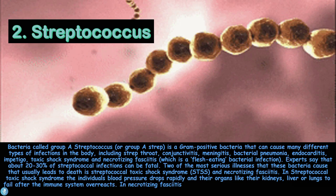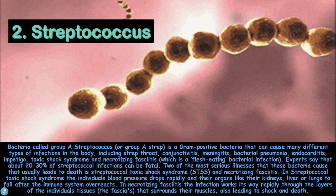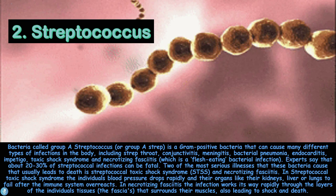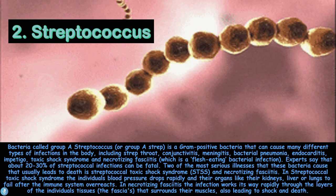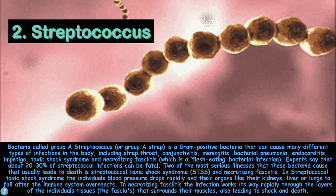Two of the most serious illnesses caused by these bacteria are streptococcal toxic shock syndrome (STSS) and necrotizing fasciitis. In STSS, the individual's blood pressure drops rapidly and organs like the kidneys, liver, and lungs fail after the immune system overreacts. In necrotizing fasciitis, the infection rapidly works its way through the layers of the individual's tissues and fascias surrounding their muscles, quickly leading to shock and death.